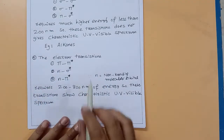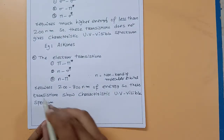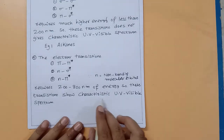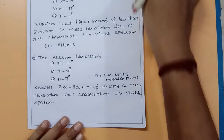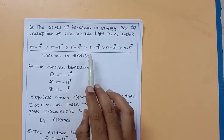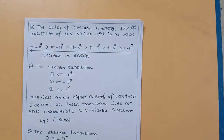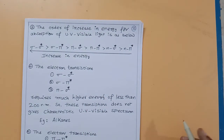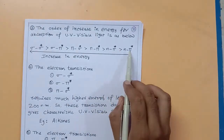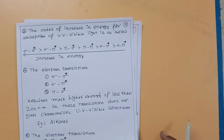The fifth point: the electron transitions pi to pi-star, non-bonding to sigma-star, and non-bonding to pi-star require energy in the range of 200 to 800 nanometers. These transitions show characteristic UV-visible spectra. Therefore, pi to pi-star, non-bonding to sigma-star, and non-bonding to pi-star are the three important transitions that produce characteristic UV-visible absorption.